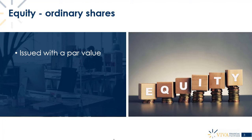The par value — for example one dollar, fifty cents, five dollars — is written on the share and decided by the company doing the issuing. If shares are being issued for the first time, they will normally be issued at their par value. They can be issued higher, but that typically happens once the company has an established track record, a loyal customer base, and is generating income and profit.